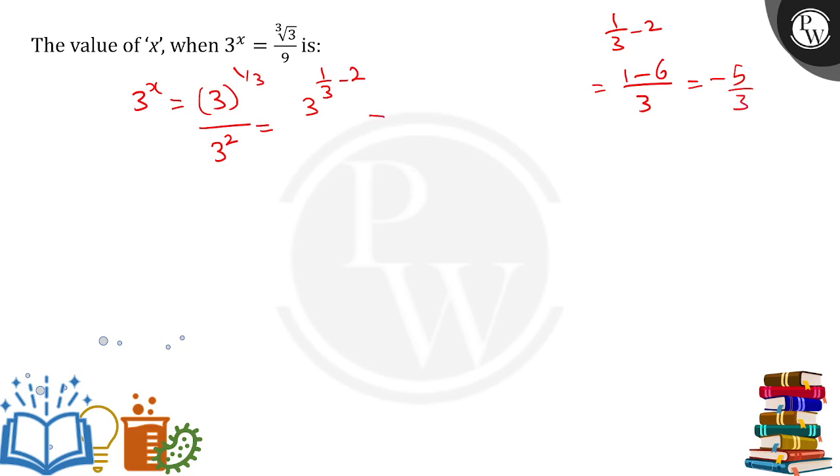Therefore, 3 raised to the power -5/3 equals 3 raised to the power x. Since the base numbers are the same, the exponents must be equal. The final answer is x = -5/3.